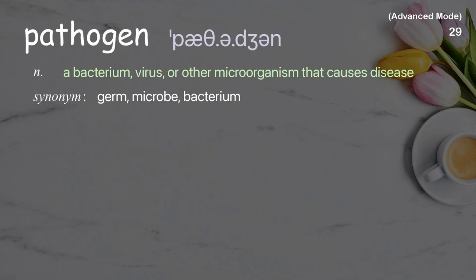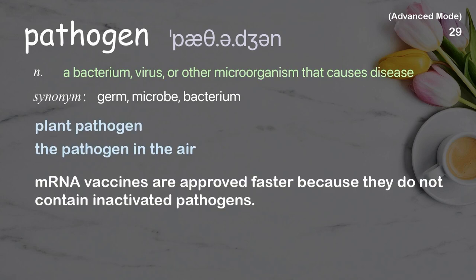Pathogen: a bacterium, virus, or other microorganism that causes disease. Examples: plant pathogen. The pathogen in the air. mRNA vaccines are approved faster because they do not contain inactivated pathogens.